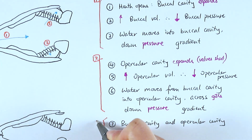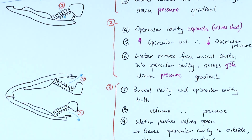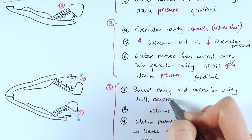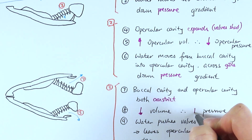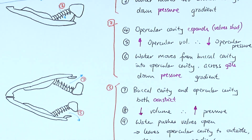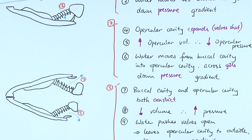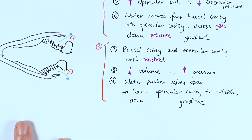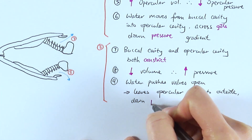The third stage is about how water actually moves out. Both the buccal cavity and the opercular cavity constrict, doing the opposite of before — decreasing volume in both and increasing pressure in both. All the water still in these cavities is then pushed out. As the cavities constrict, the mouth closes. Because the pressure in both the buccal and opercular cavities is now much higher than the outside water pressure, the water pushes the valves open and leaves the opercular cavity to the outside — again, down the pressure gradient.